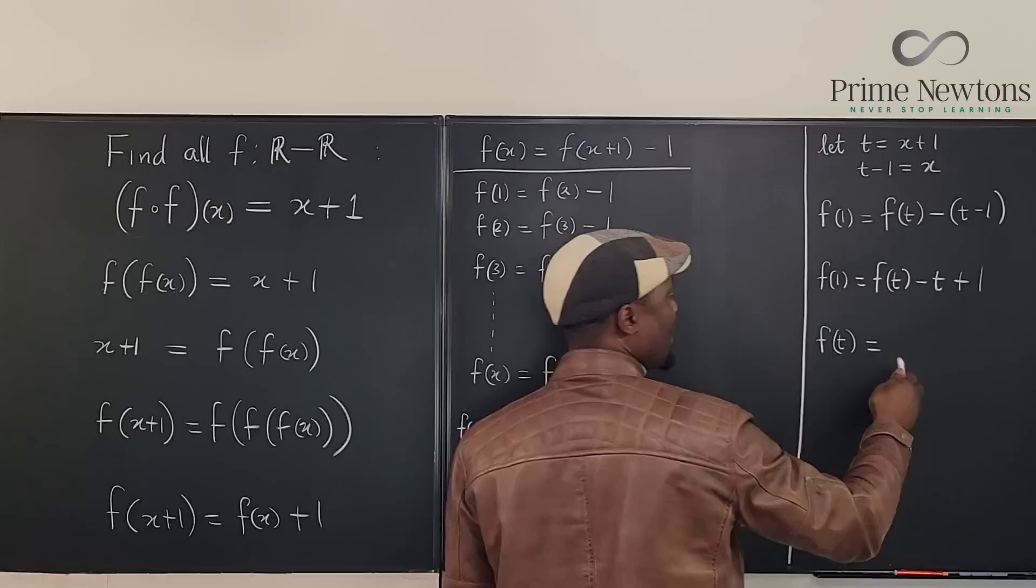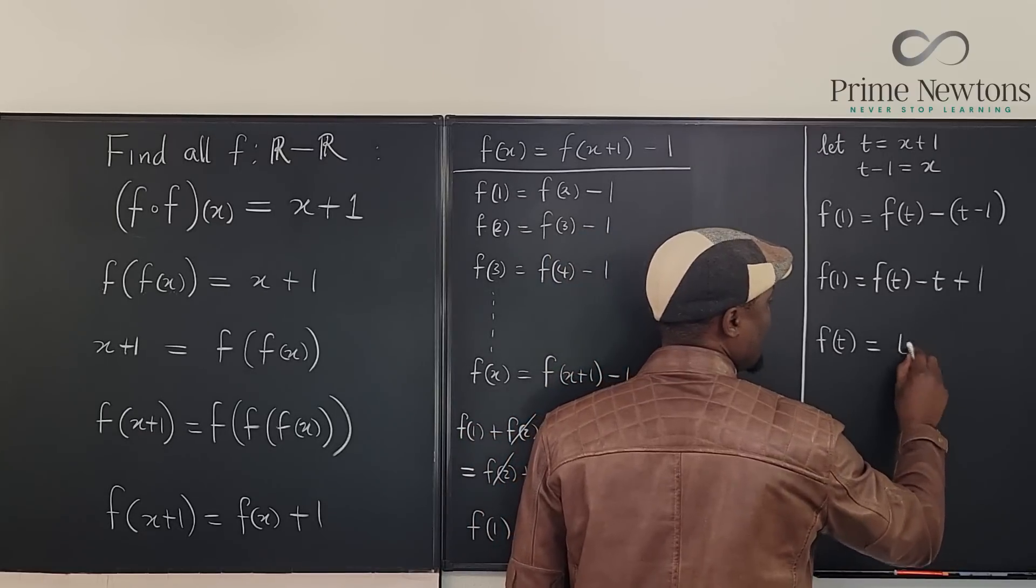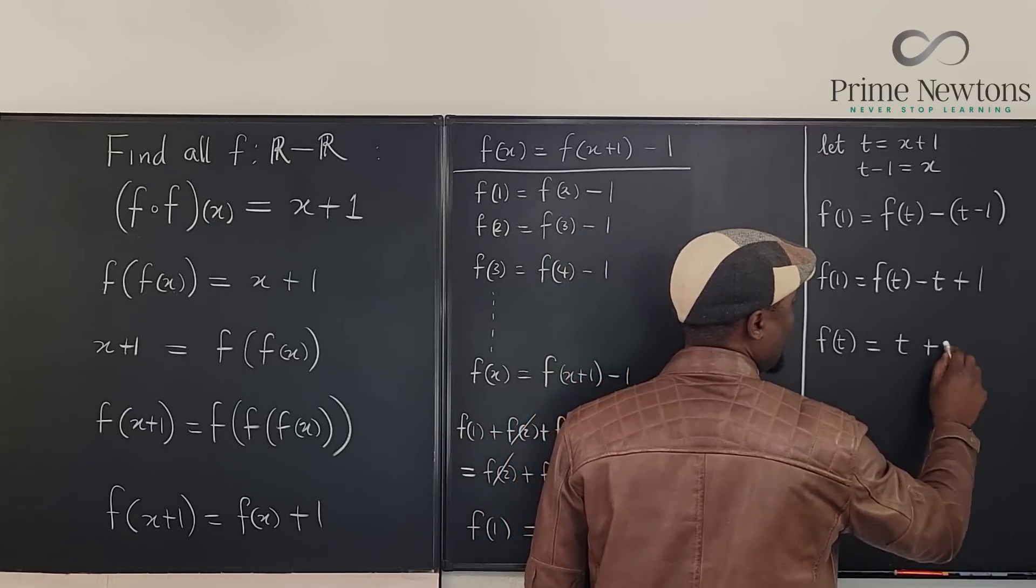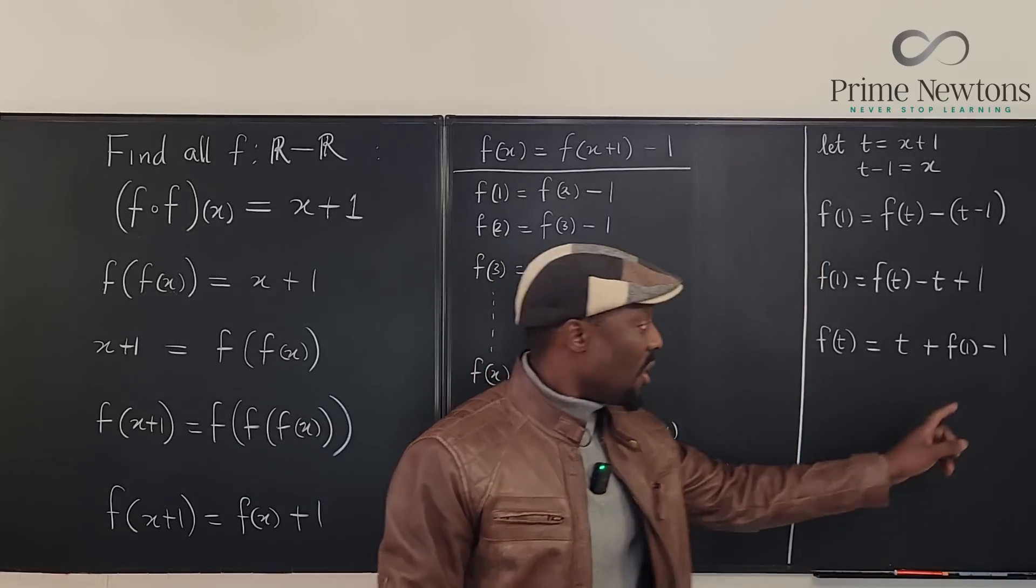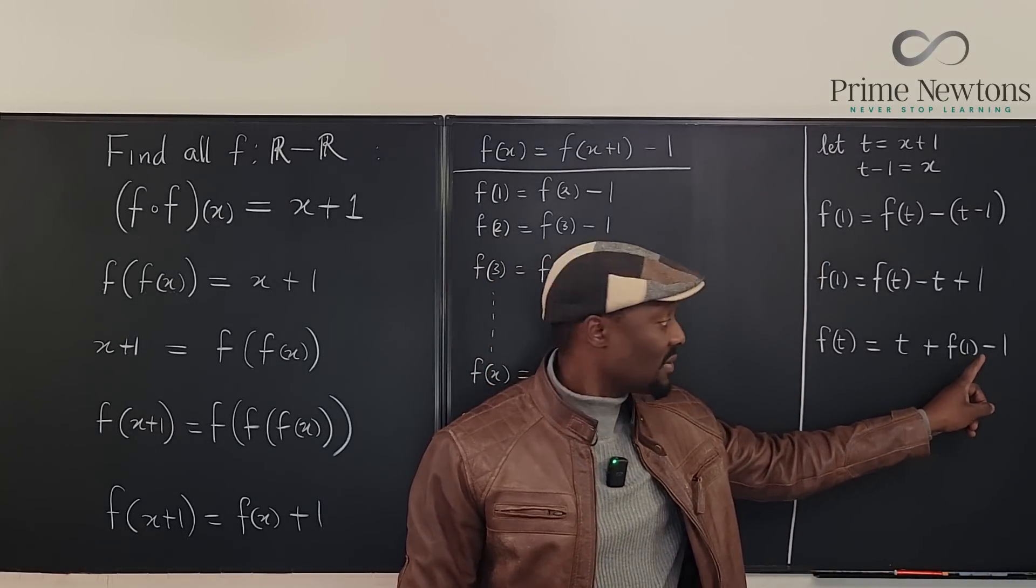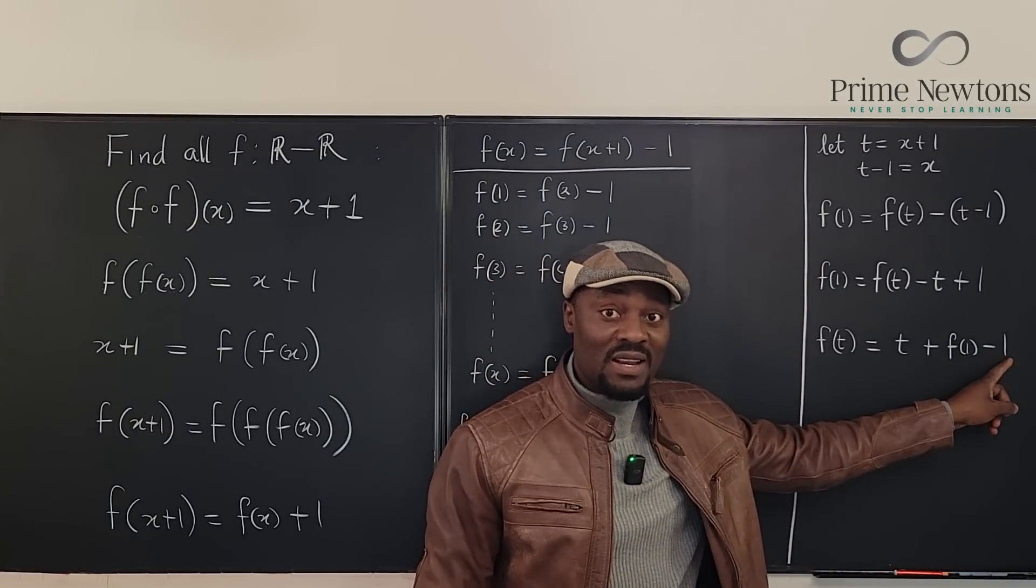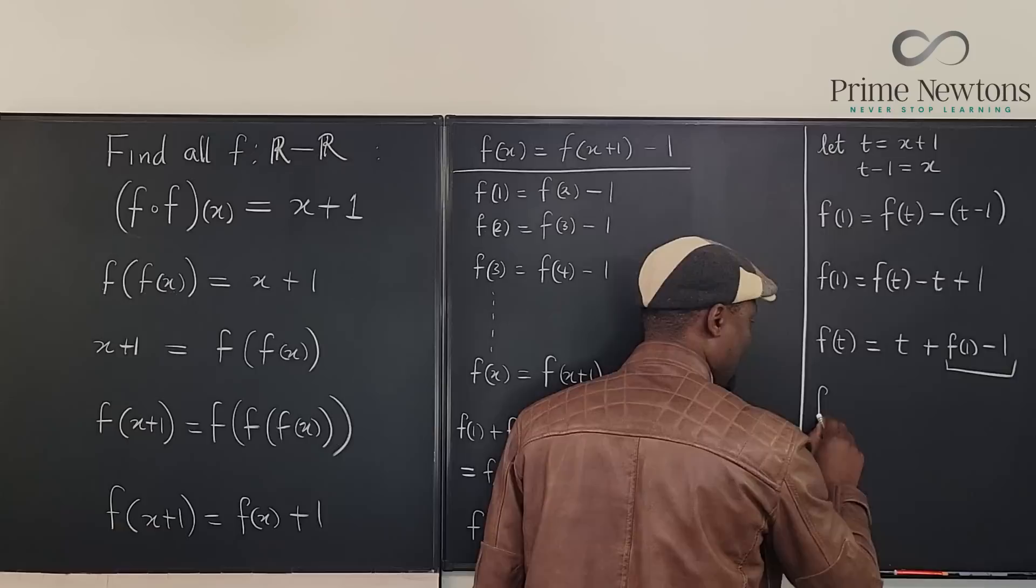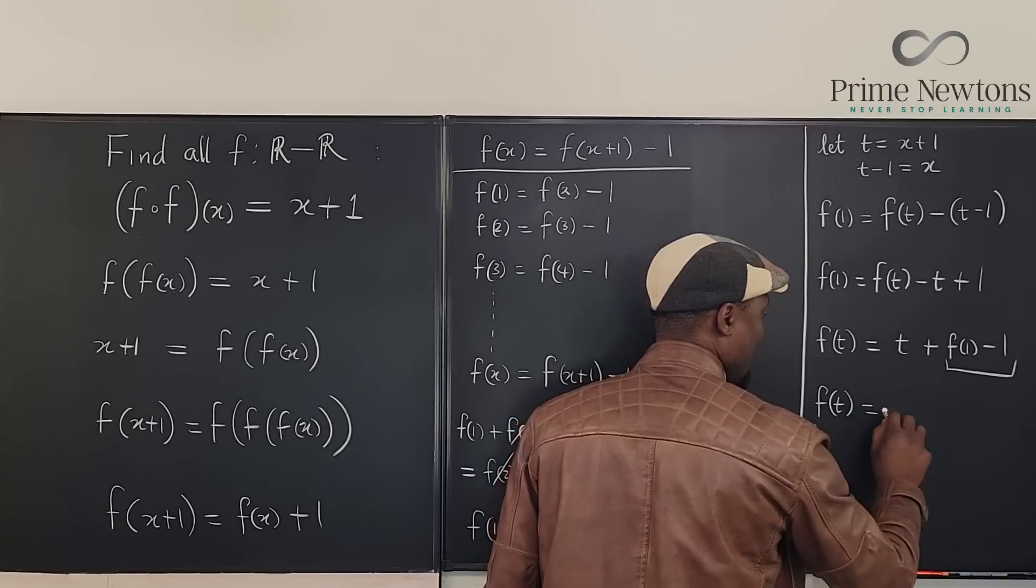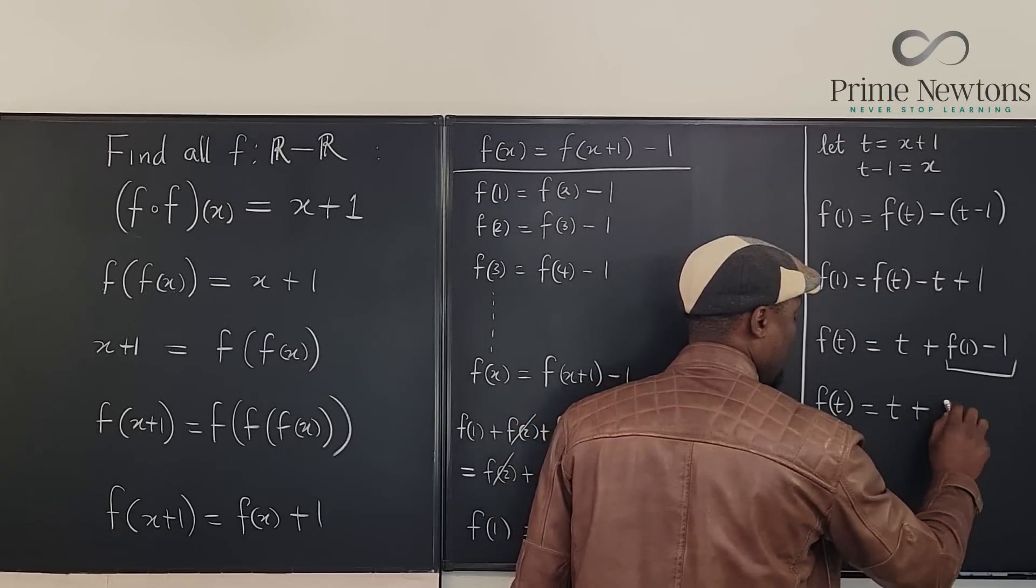f of t is going to be equal to if we move everything here. It's going to be t plus f of one minus one. But f of one is a number minus one. This is a constant. This is a constant.